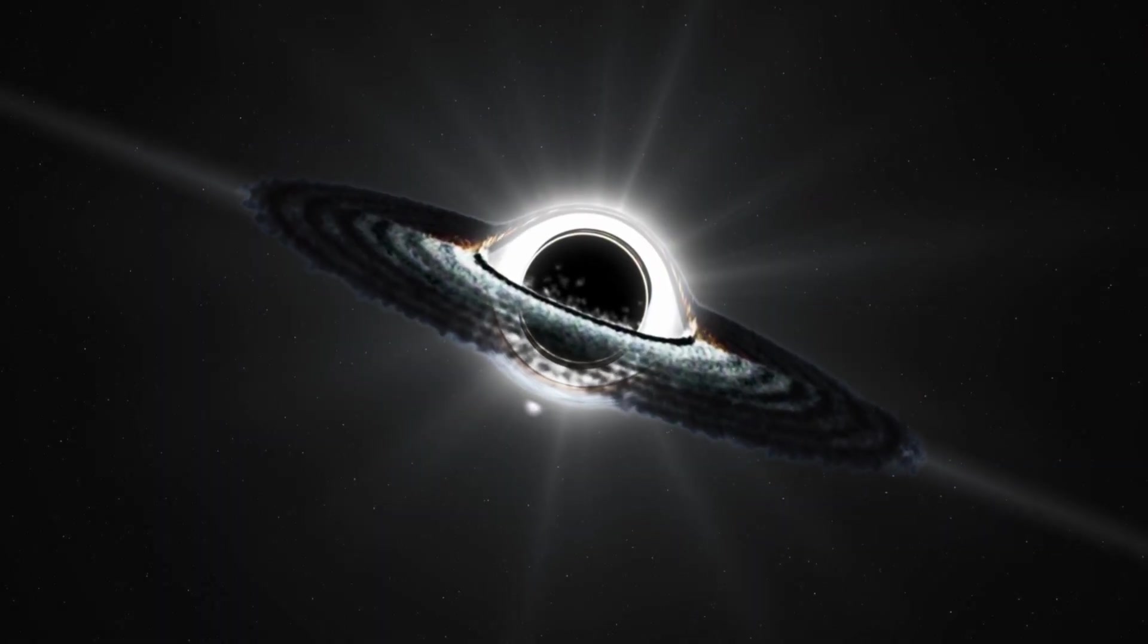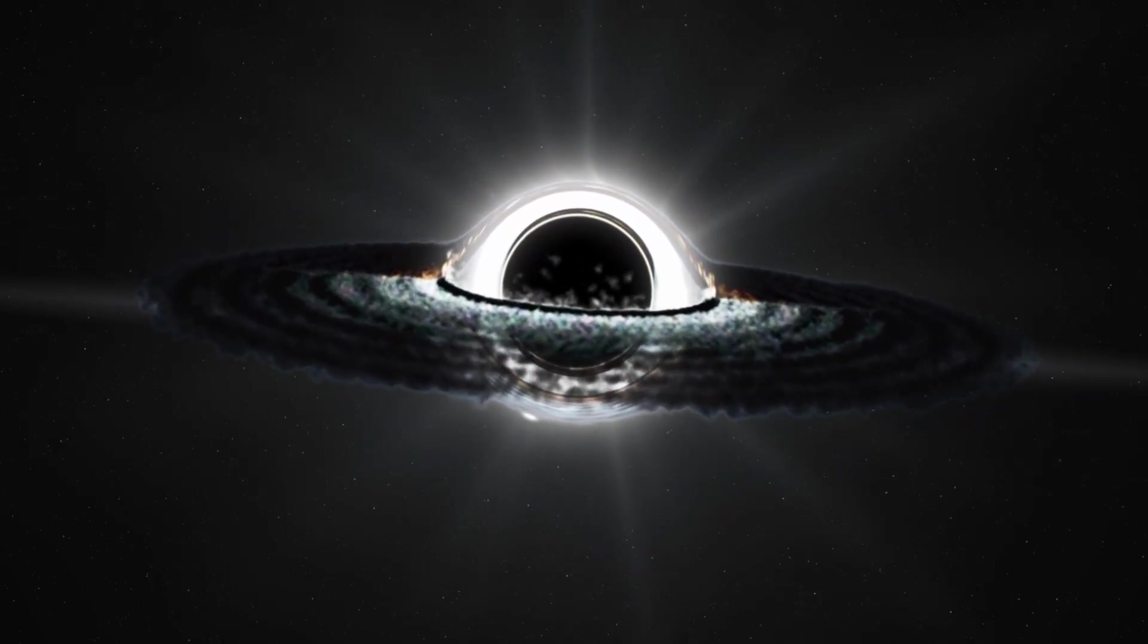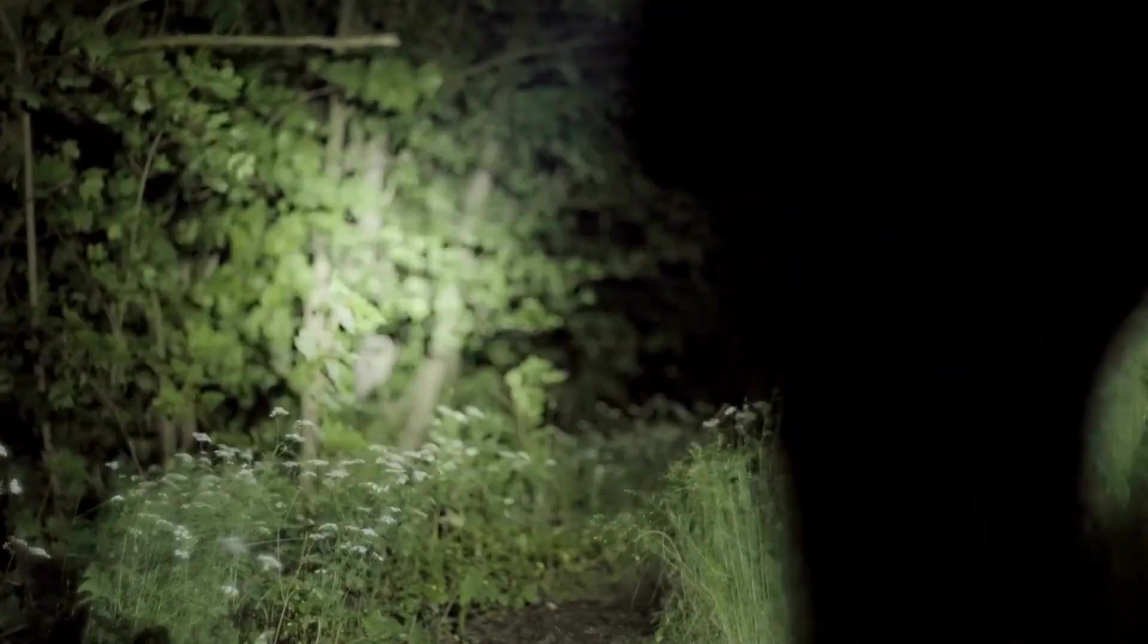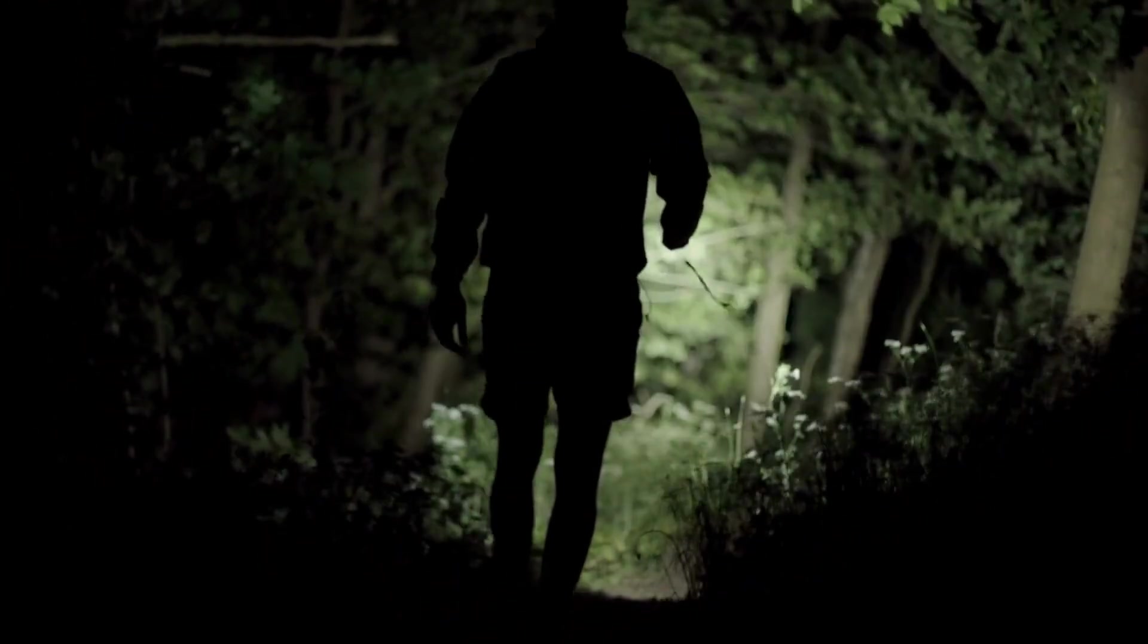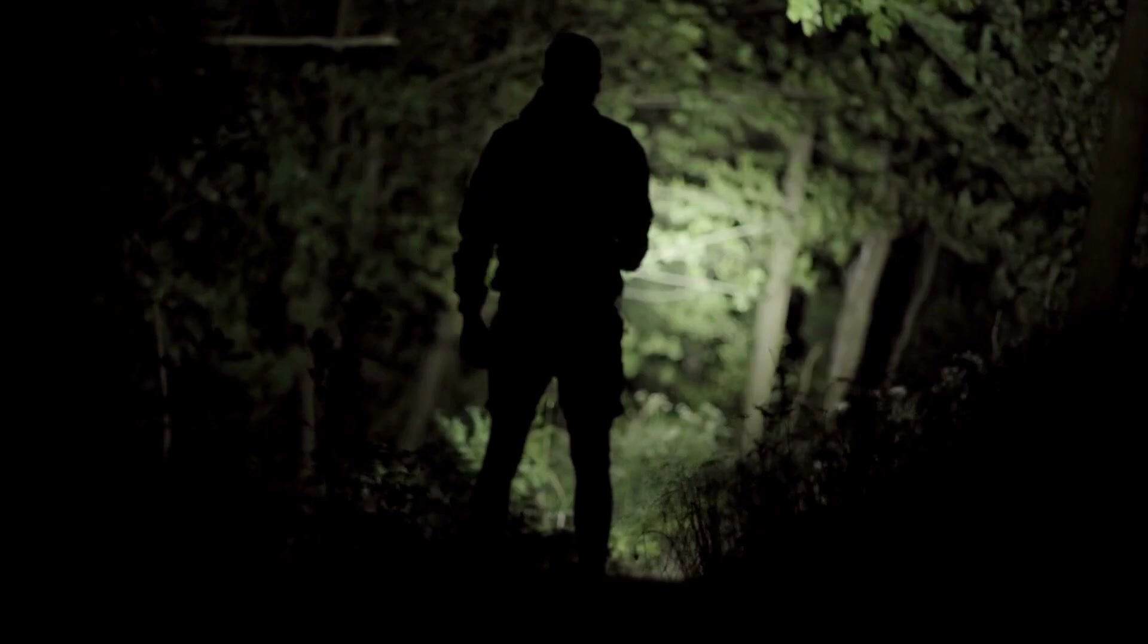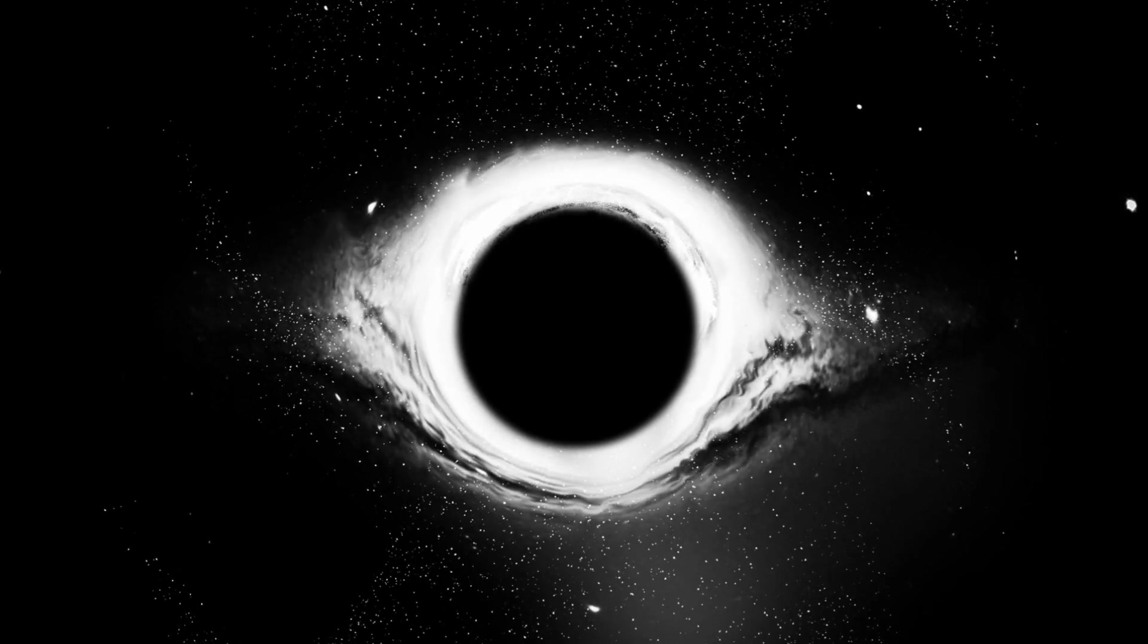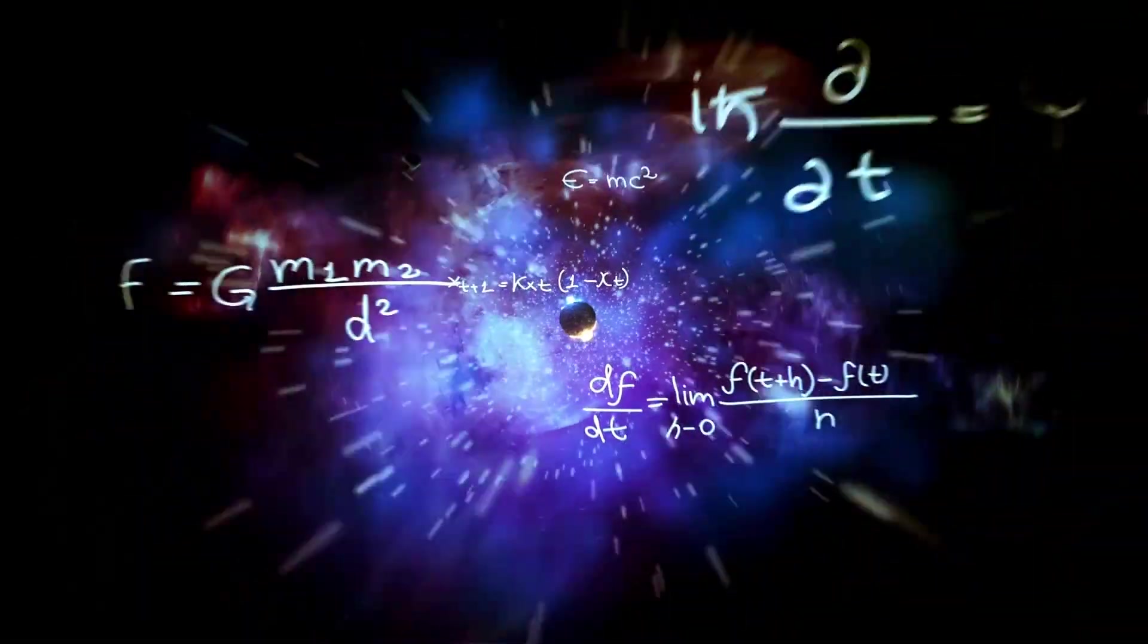The event horizon forms an invisible force field that holds everything within it, including light, which is normally considered the fastest entity in the universe. To highlight the extraordinariness of the situation, imagine that you are turning on a flashlight. The light rays emit travel at an astonishing speed of approximately 300,000 km per second. However, if you were to somehow find yourself inside a black hole, the speed required to escape its pull would be even faster than the speed of light. This is completely impossible according to our current understanding of physics.